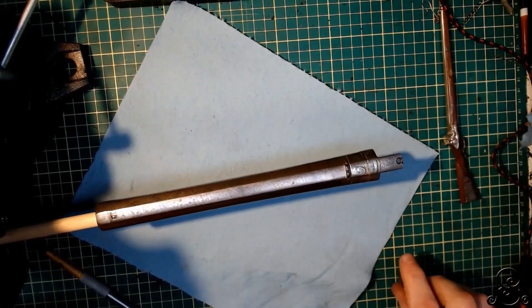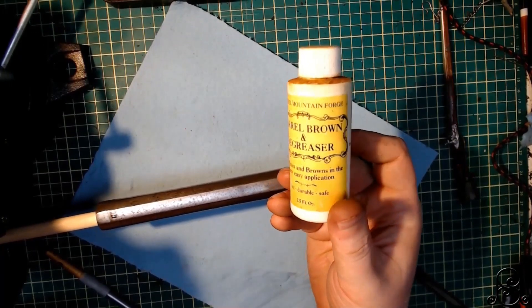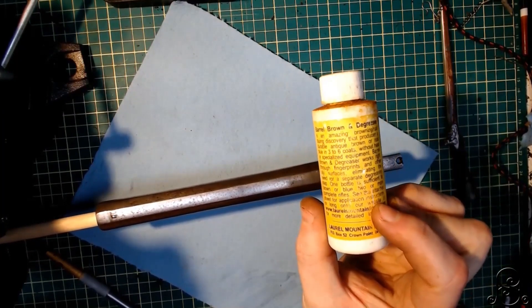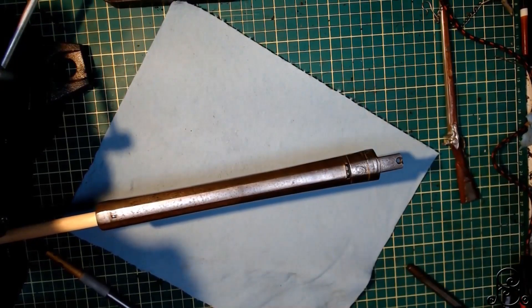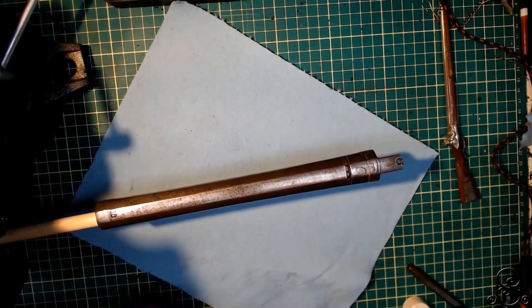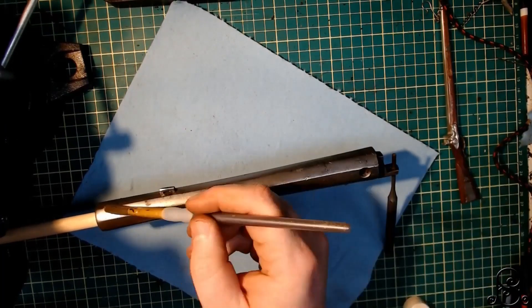What I'm showing you now is the piece has been prepared, cleaned, and I'm pulling out this browning chemical here. I'll have a link to where it's from. It's actually a pretty cool browning material. It's called Barrel Browning and Degreaser by Laurel Mountain Forge.